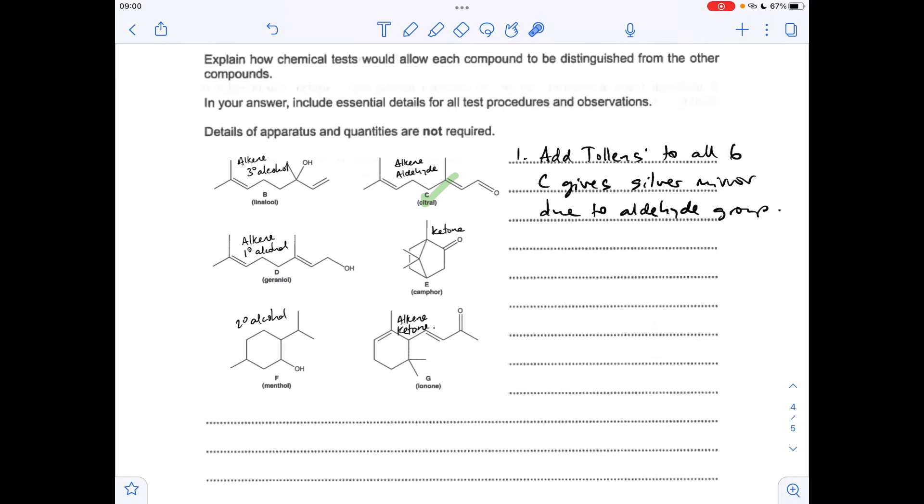The next thing I'm going to do is add bromine water to the remaining five. So hopefully you can appreciate that B, D, and G will all decolorize the bromine because they've got the alkene functional group, whereas E and F won't. So at this point all we know is that B, D, and G are alkenes, whereas F and E aren't.